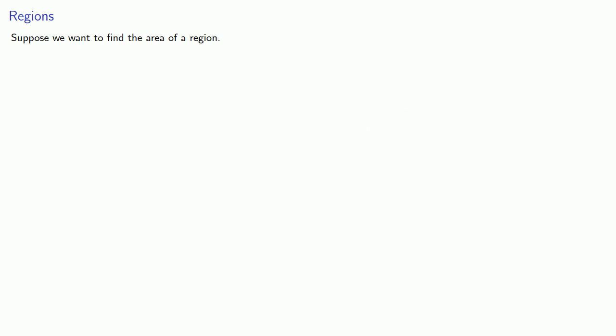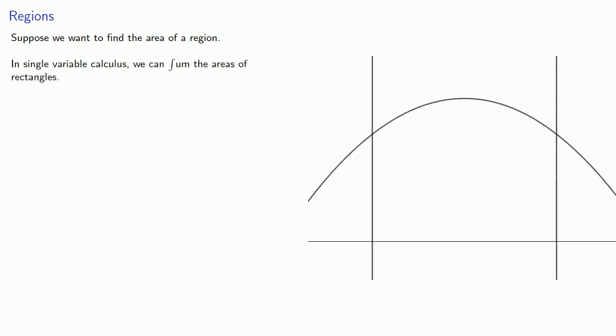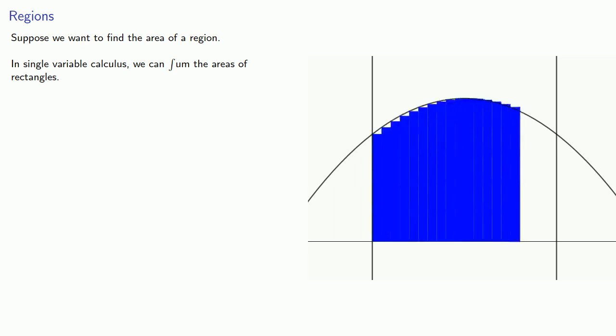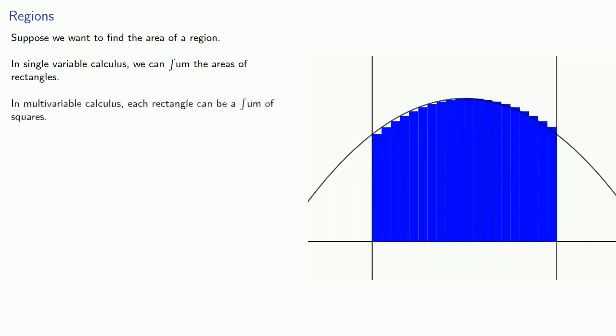Suppose we want to find the area of a region. In single variable calculus, we can sum the areas of rectangles. In multivariable calculus, each rectangle can be the sum of squares.